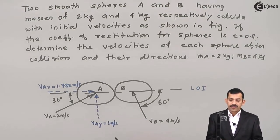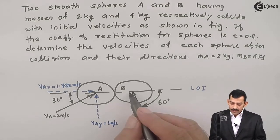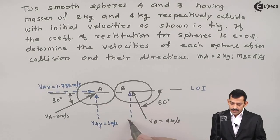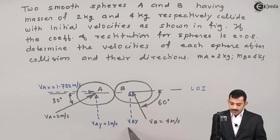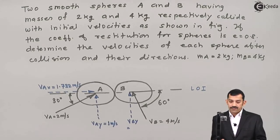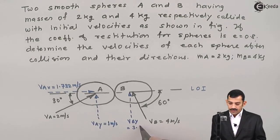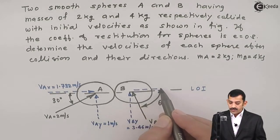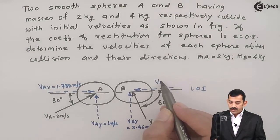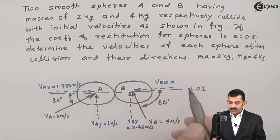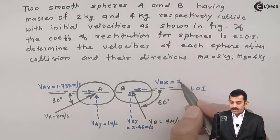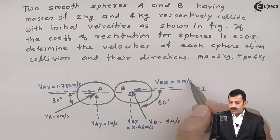For body B, which is inclined at 60°, resolving gives one component in the vertically upward direction: vBy = 4 sin 60° = 3.46 m/s. The horizontal component of this velocity is leftward: vBx = 4 cos 60°. Since cos 60° is 0.5, this component is 2 m/s.